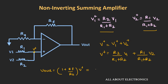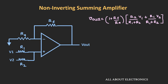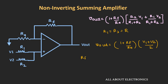The output voltage is Vout = (1 + RF/Ra) · V+. Simplifying with R1 = R2 = R: Vout = (1 + RF/Ra) · (V1 + V2)/2. If RF = Ra, then Vout = V1 + V2 — the addition of V1 and V2. So using the non-inverting summing amplifier, we can also perform addition.